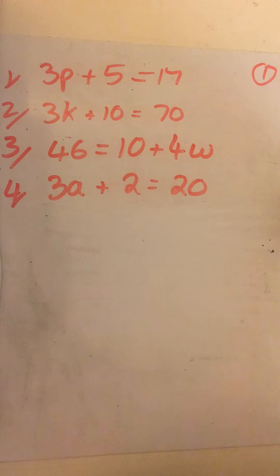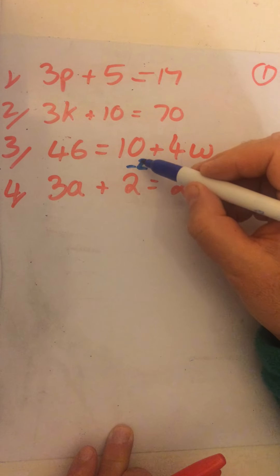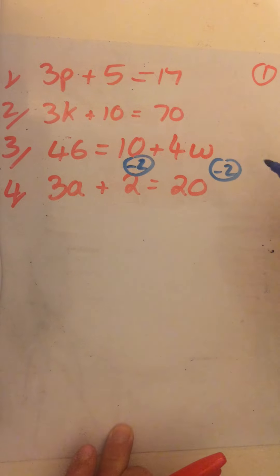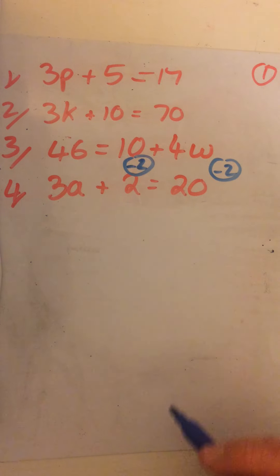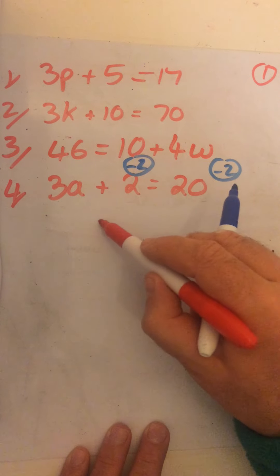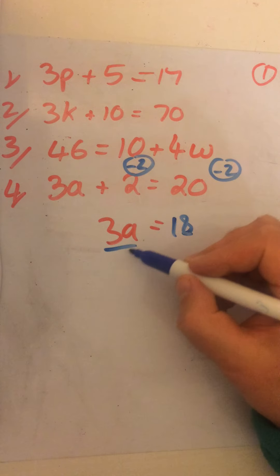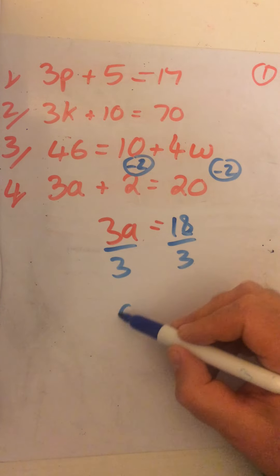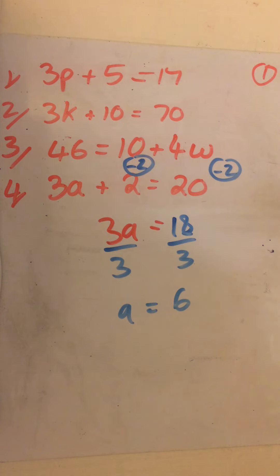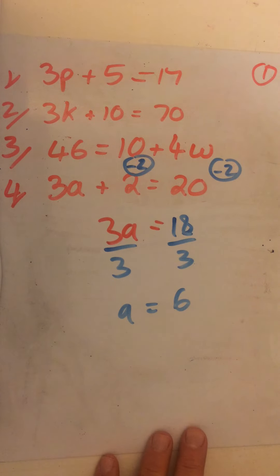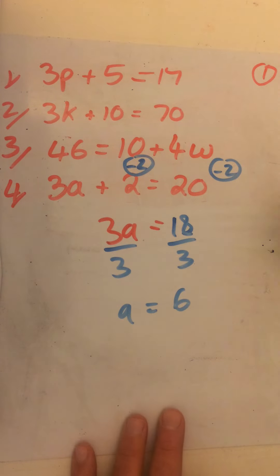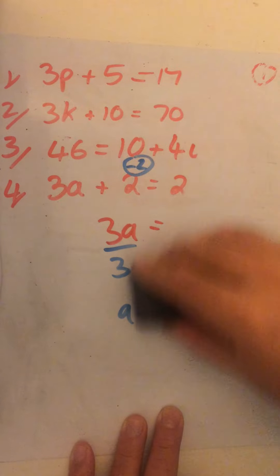Last one: there's a positive 2 here, so I'm going to take 2 away and do the same on the other side — balance method. That leaves me with 3a equals 18. Divide by 3, divide by 3 — a equals 6. Hopefully you're okay with those. If you're not too sure, go back, rewatch parts of the video and have a go again, or you can contact me.